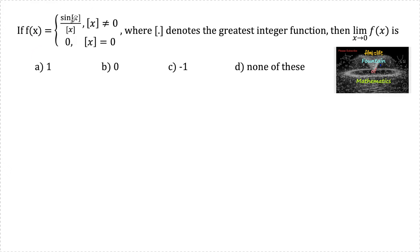If f of x is equal to sin of [x] upon [x], where [x] is not equal to 0, and f of x equals 0 when [x] equals 0, where square brackets denote the greatest integer function, then the limit as x tends to 0 of f of x is to be determined. Since the function involves the greatest integer function, let us find its left limit and right limit.